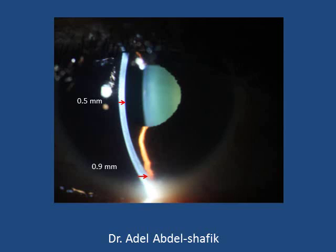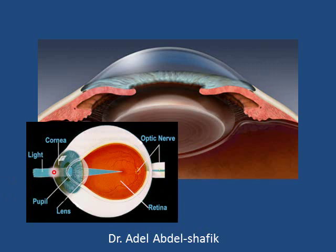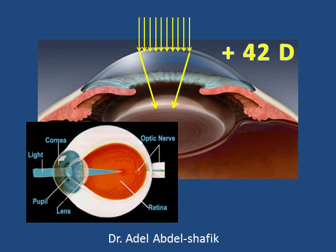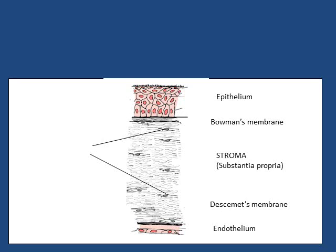The cornea has a thickness of half a millimeter in the center and one millimeter toward the limbus. Light coming from the external world passes through the cornea, then through the lens, to get focused on the retina. The cornea is a very strong plus lens of power +42, while the crystalline lens has a power of only +18, so the cornea makes up two-thirds of the total optical power of the eye. The central part of the cornea has a radius of curvature of 7.8 mm.